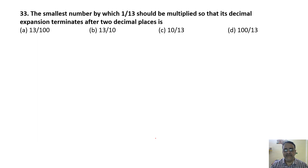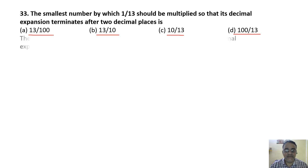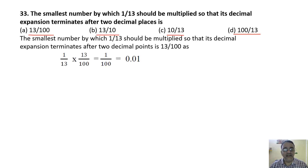Question 33 (implied): Identifying a terminating decimal. The number 100/13 is non-terminating, one other option terminates at one decimal place, and the target terminates at two decimal places. To make 1/13 terminate after two decimal places, multiply by 13/100, giving 1/100 = 0.01. The correct answer is option A.